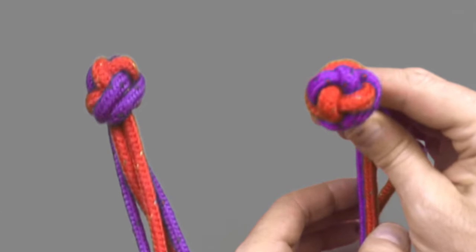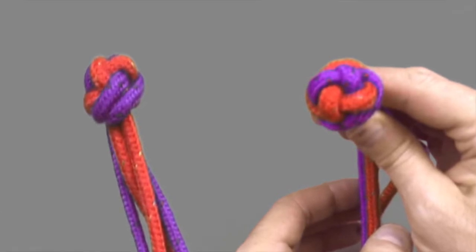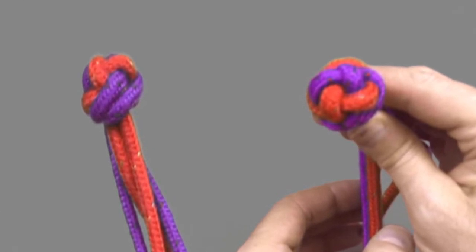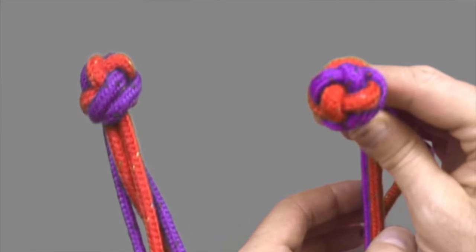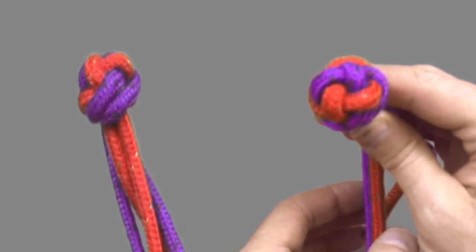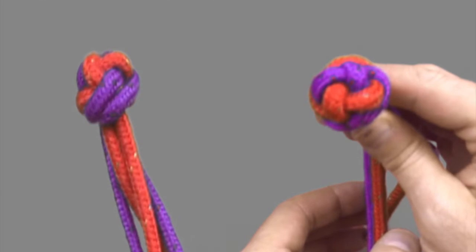When tying the button knot it's important to pick a direction and for today's demo we're going to select clockwise. Basically this means whenever we're looping the ropes around each other we'll always do it in a clockwise direction.